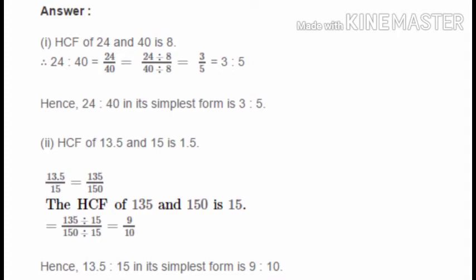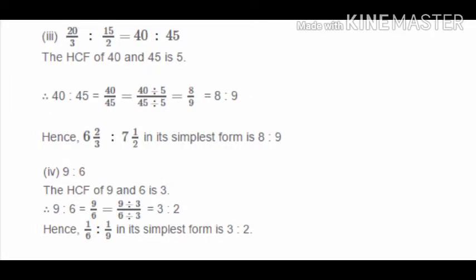For Question 1 part 2, one number is in decimal form. First remove the decimal: 13.5 becomes 135, giving 135:150. The HCF of 135 and 150 is 15. Dividing both by 15 gives 9:10. So the simplest form of 13.5:15 is 9:10.